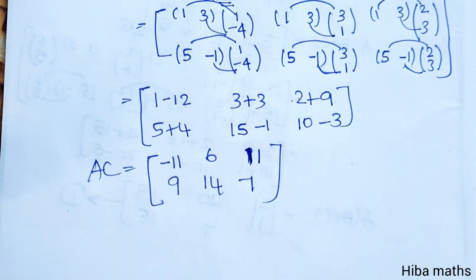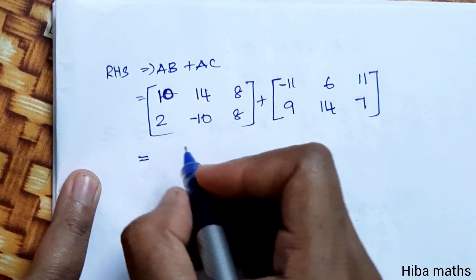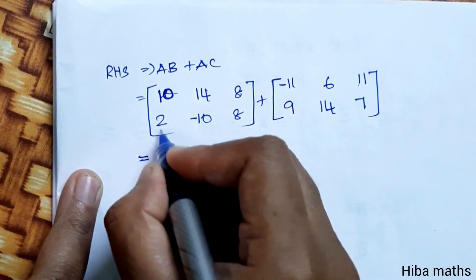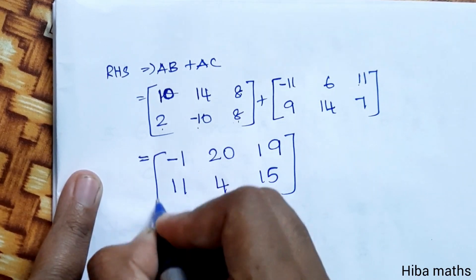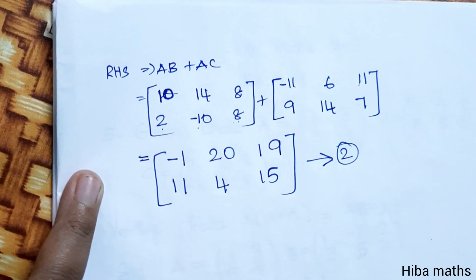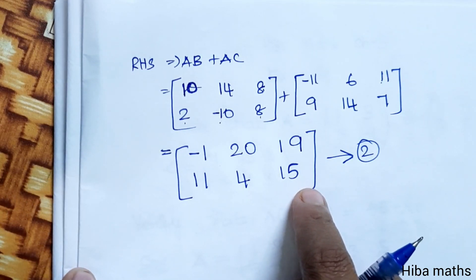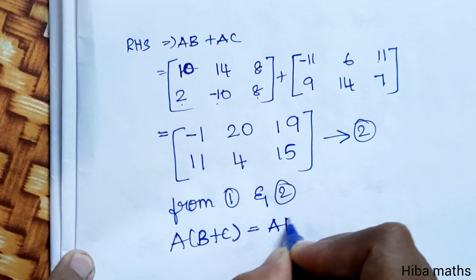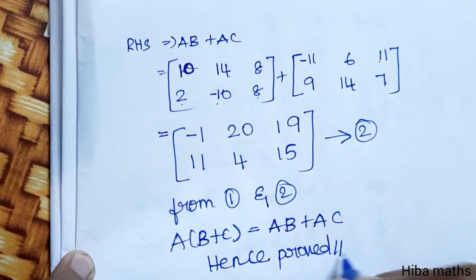Now computing RHS: AB plus AC. Adding [10,14,8;2,-10,8] plus [-11,6,11;9,14,7]: 10-11 = -1; 14+6 = 20; 8+11 = 19; 2+9 = 11; -10+14 = 4; 8+7 = 15. So AB + AC equals [-1,20,19;11,4,15]. From results 1 and 2, A(B+C) is equal to AB + AC. Hence verified. Thank you so much for watching.